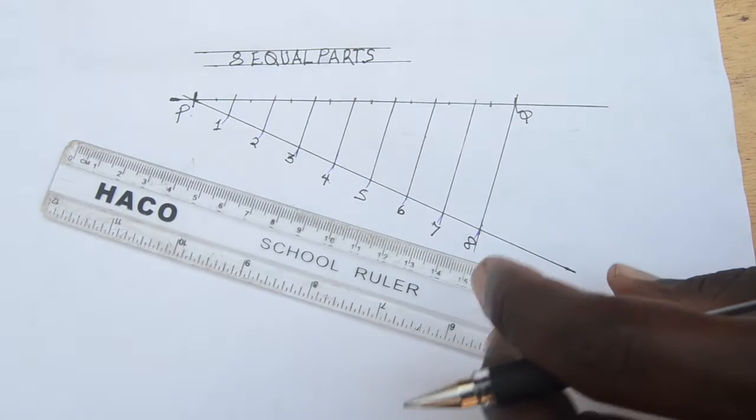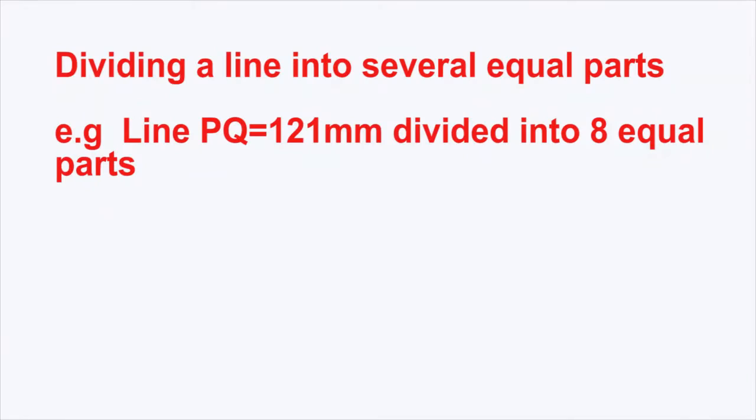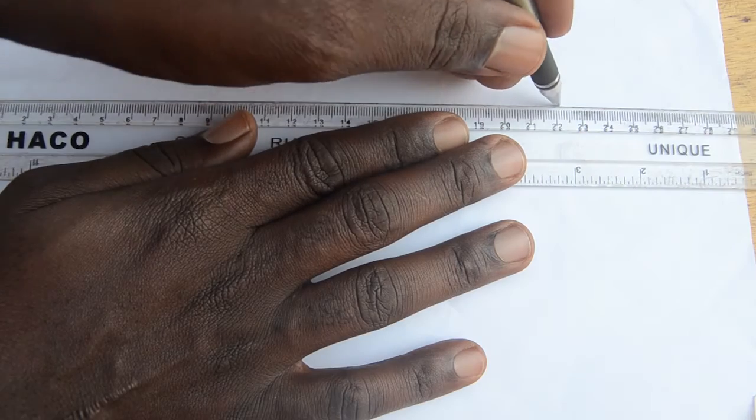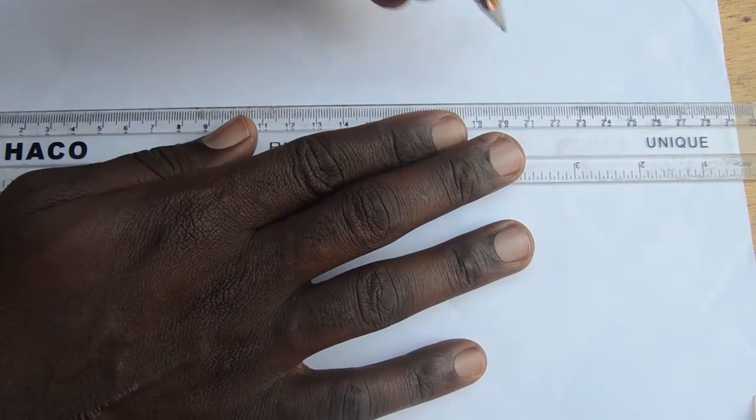So we start by drawing the line PQ equal to the length of 121 millimeters.